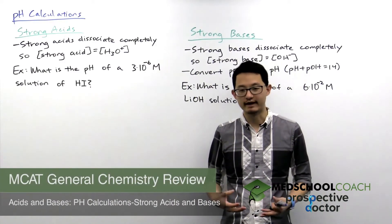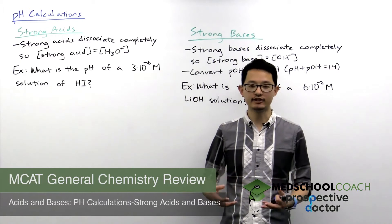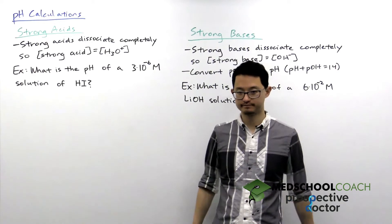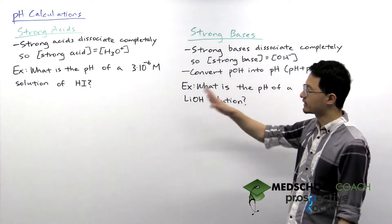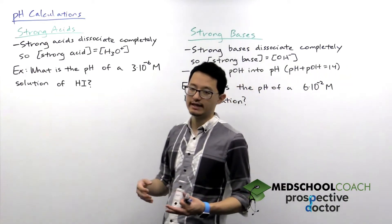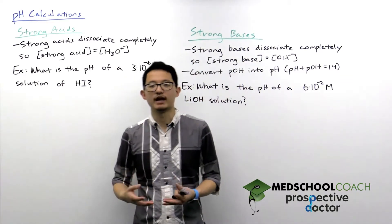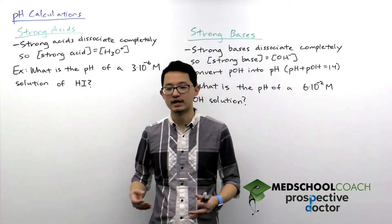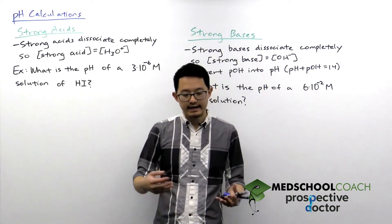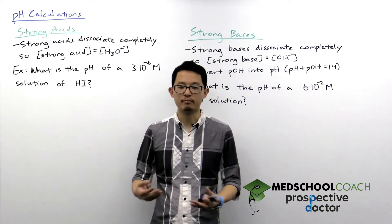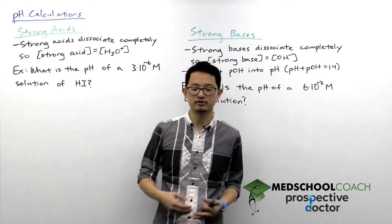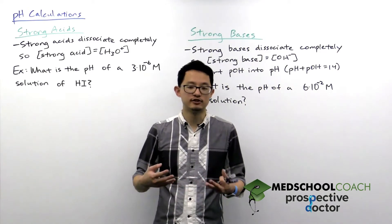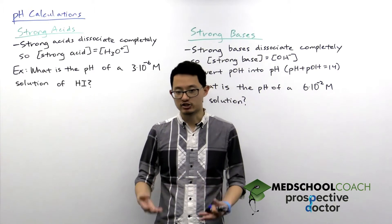In this video we're going to talk about how to calculate the pH of strong acid solutions and strong base solutions. Before we look at how to do these calculations, the first thing I want to mention is not every MCAT question about pH is just a direct pH calculation question. There are questions like how does the hydrogen ion concentration compare between a pH 2 solution and a pH 5 solution? There the question is more so asking you if you understand the pH scale.